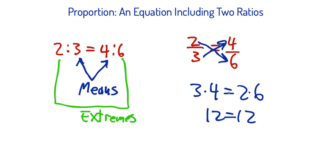These are equivalent ratios. So basically proportions use the cross product or cross multiplication to check if two ratios are equivalent.